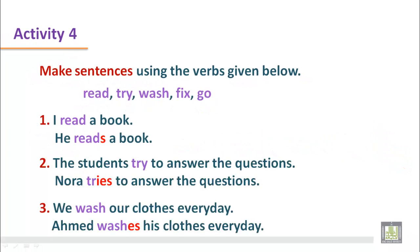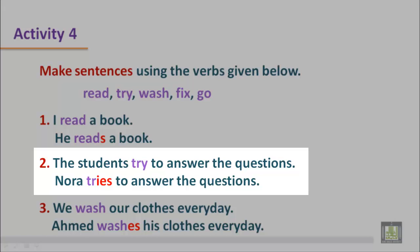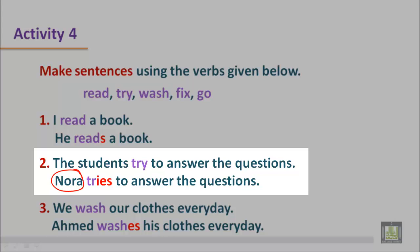In sentence number two: the students try to answer the questions. Here, 'the students' is a plural subject in the third person plural, so this subject doesn't require any verb with S, ES, or IES at the end. It is simply the base form: try. But when we use this verb with a singular subject in the third person, like Nora, then we have to add S, ES, or IES with the verb. Here we can see the verb 'tries'.